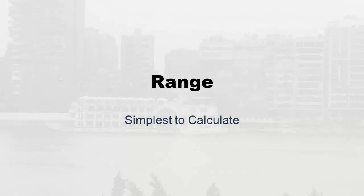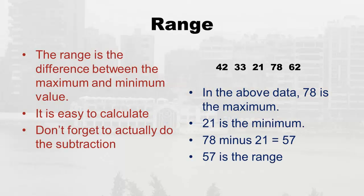We'll start with range because it's the simplest to calculate. On the right, I made up five numbers just for demonstration. The range is the difference between the maximum and minimum value. You search for the highest — in this little data set of five numbers, 78 was the highest — and 21 is the lowest. So range equals 78 minus 21, which equals 57. Students sometimes write '78 minus 21' and call that the range — no, you actually have to subtract it out. The range is 57, and all it tells you is the distance between the top and the bottom.